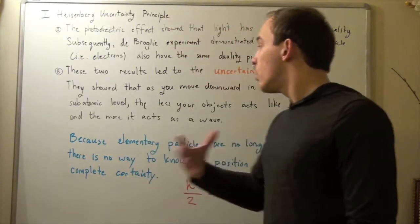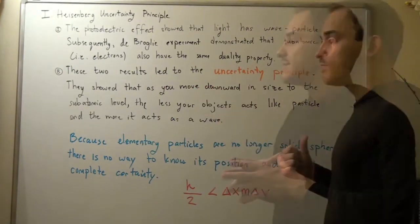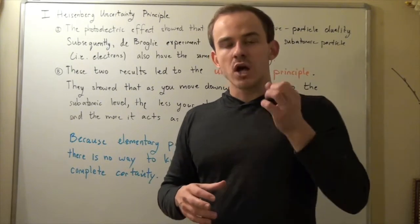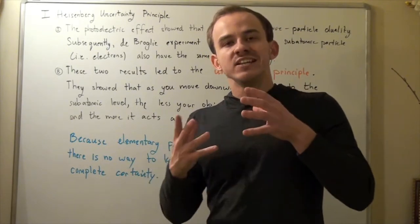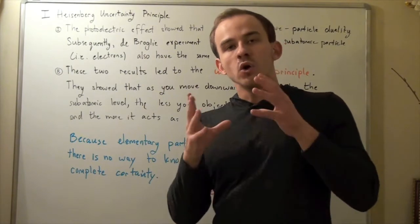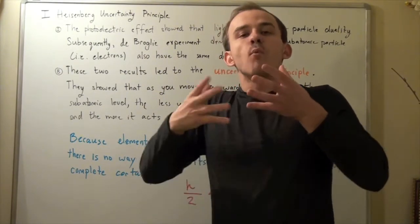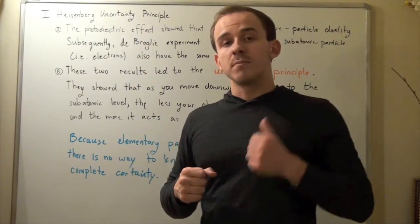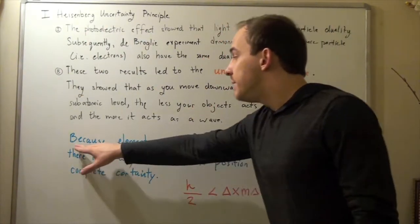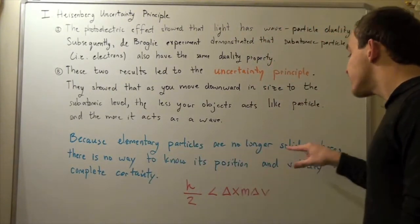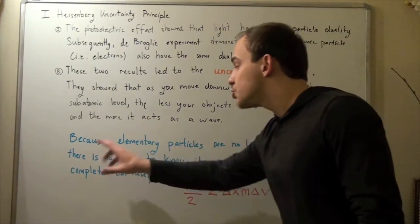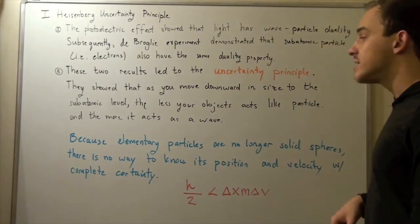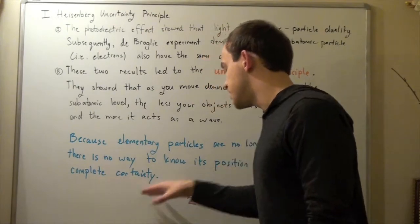The point, and what this uncertainty principle shows, is that as you shrink down to the atom and then to the subatom — to the electron — you are no longer dealing with solid spheres. They are no longer solid spheres and they act more as waves. In other words, they have both wave-like properties and solid properties. And that means, because elementary particles are no longer solid spheres, there's no way to know its position and at the same time its velocity with complete certainty.